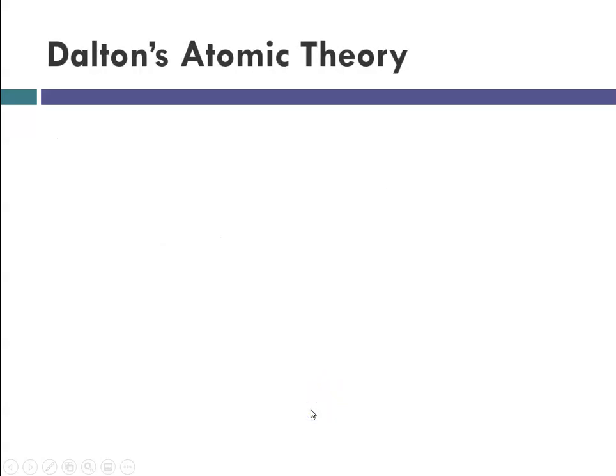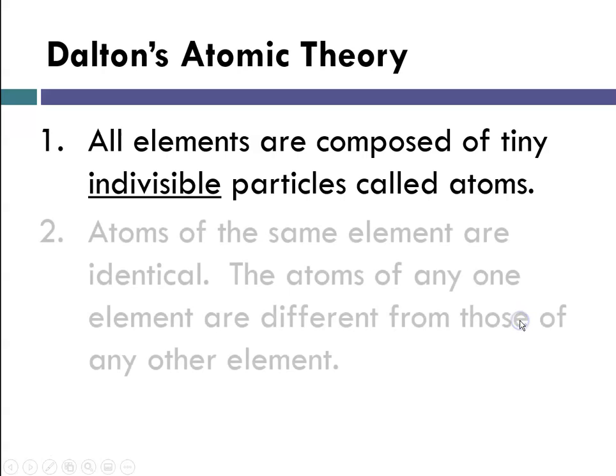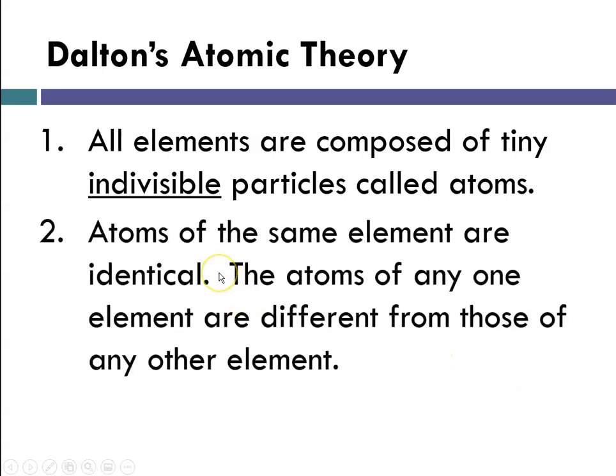Dalton's atomic theory has five basic postulates. Number one: all elements are composed of tiny indivisible particles, and he called them atoms. Second, he said atoms of the same element are identical. The atoms of any one element are different from those of another element.